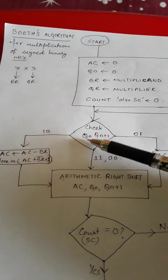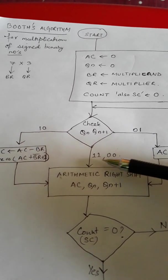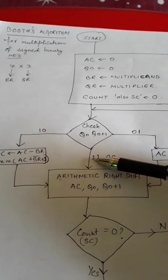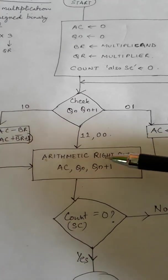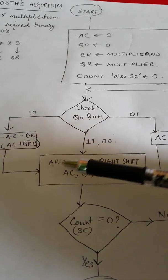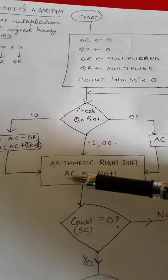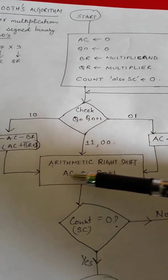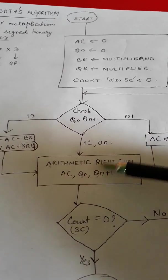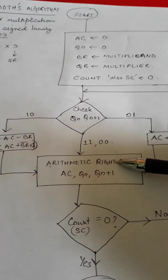These are the two different steps that we take depending on the value of QN and QN plus one. And then the last possibility is that the value that we are checking is either one,one or zero,zero. In both the cases we have a common operation - that is why it is going to this one single arrow - and here we have to do what is known as arithmetic right shift. This is shifting process - shifting of the bits towards the right direction. We will do shifting of three registers: we'll right shift AC - whatever the bits are they will shift by one place towards right - QN bits also right shift, and QN plus one. This we will do if the value that we are checking is either one,one or zero,zero.